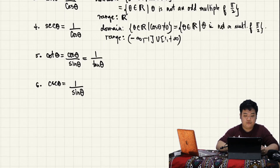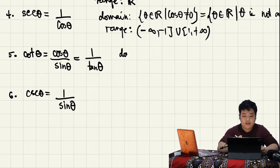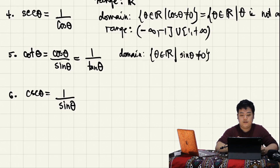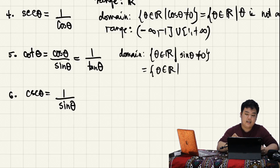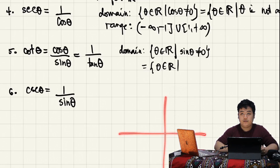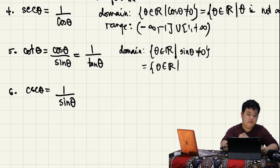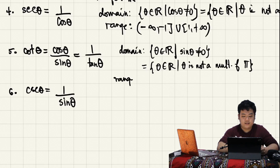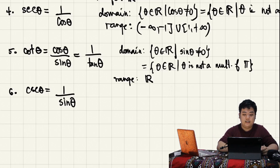For cotangent, the domain is the set of theta in R such that sine theta is not equal to zero. Sine equals zero when P of theta is at 0, pi, 2pi, 3pi, 4pi, 5pi, 6pi — that is, the multiples of pi. So theta must not be a multiple of pi. The range of cotangent is the set of real numbers.